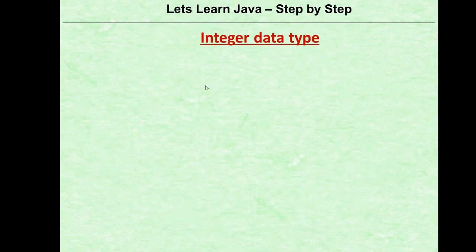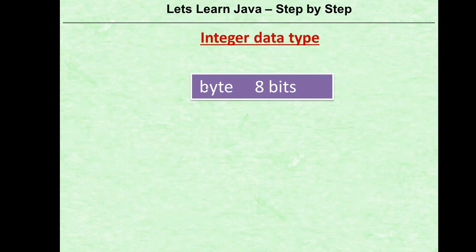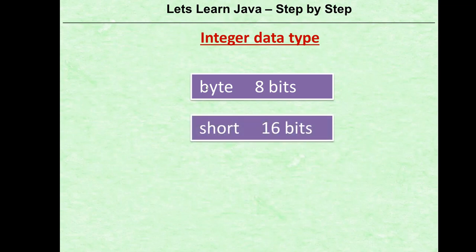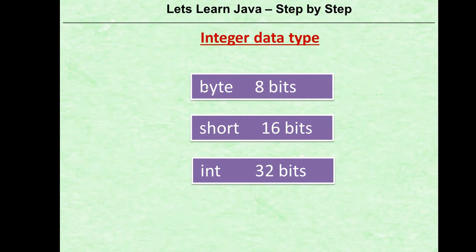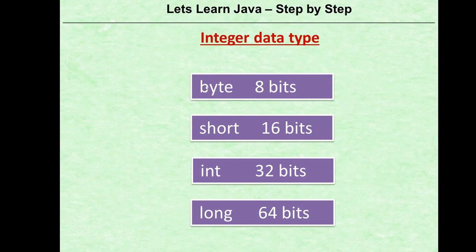Next up are the integer data types. There are no float values here — all values are integers. There are four different types depending upon the size of the data you use. The smallest is byte at 8 bits, then short at 16 bits, then int at 32 bits, and long at 64 bits. An important point is that variables in Java are platform independent — irrespective of what platform or chip you are using, the size of the variable is fixed.